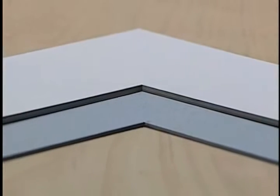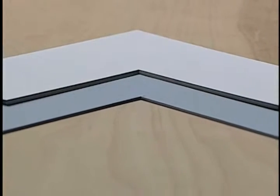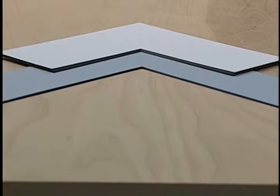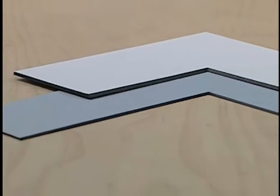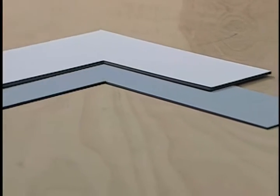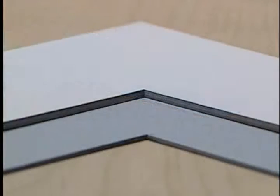For an even more dramatic look, colored core matboard is available, such as black core matboard. Black core matboard is popular for matting and framing black and white photography or other instances where the contrast difference complements the art piece.